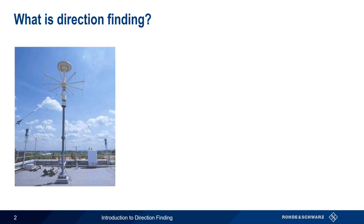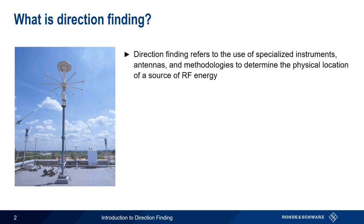Let's start by providing a general definition of direction finding. We're going to use the term direction finding to refer to the use of specialized instruments, antennas, and methodologies to determine the physical location of a source of radio frequency energy. In other words, how do we determine where a signal is coming from? There are many different ways of performing direction finding, all with their respective strengths and weaknesses.